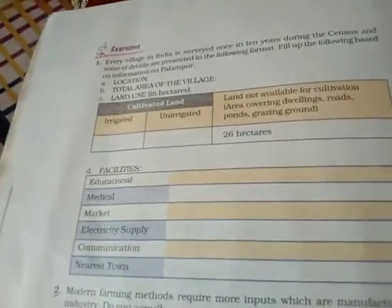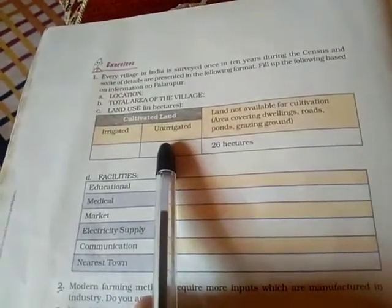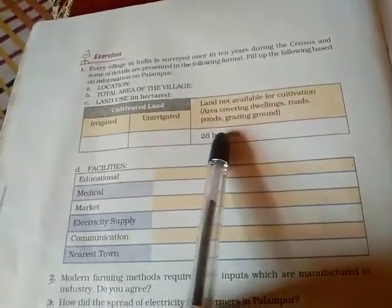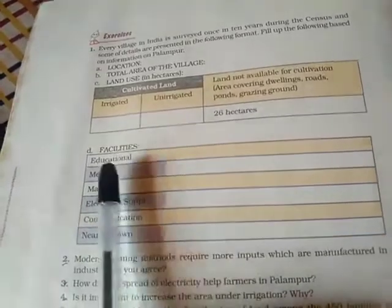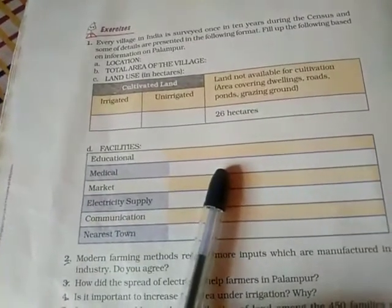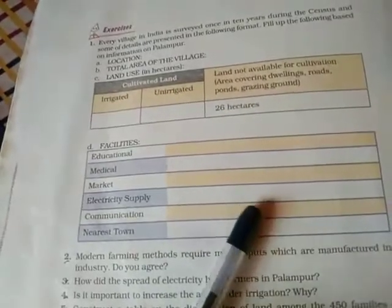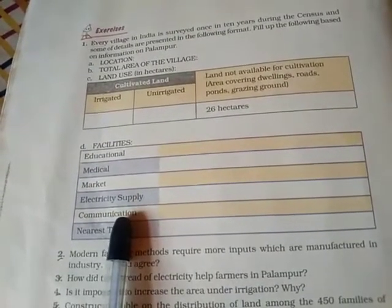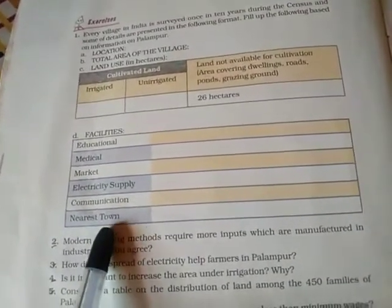Land use in hectares: irrigated land is 200 hectares, unirrigated is nil, and 26 hectares remaining, totaling 226 hectares. Educational facilities: two primary schools and one high school. Medical facilities: one government primary health care center and one private dispensary. Market: some general stores and shops selling eatables. Electricity supply: most houses have electricity. Communication: posts, telephone, and television. Nearest town: Shahpur.